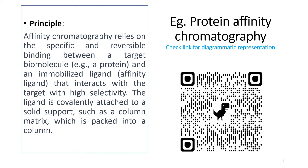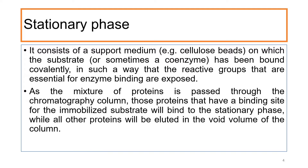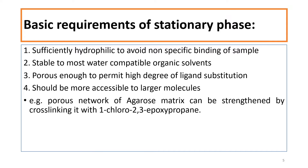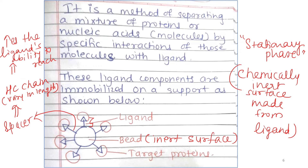Suppose I have a mixture of many proteins. Those many proteins I will pass through the stationary phase. The stationary phase is nothing but an inert particle onto which different ligands are attached. This ligand will have specific affinity in the form of a lock-and-key attachment with any one of the proteins. That protein which gets attached onto the ligand will lag behind, and the other proteins of the mixture will flow down the column.